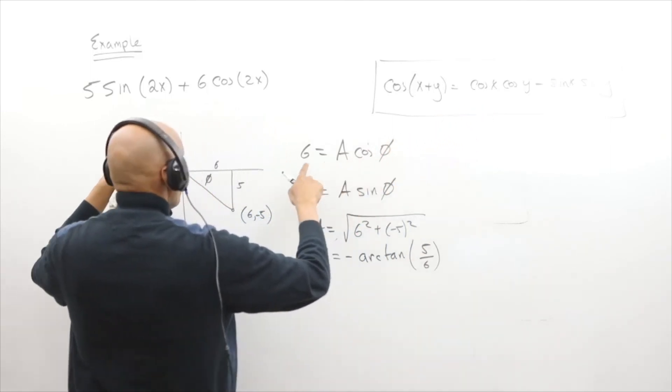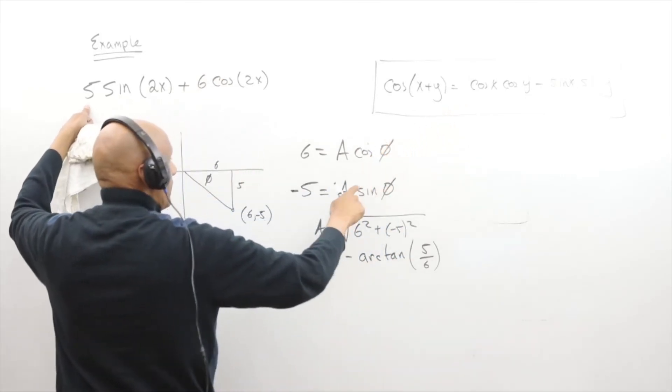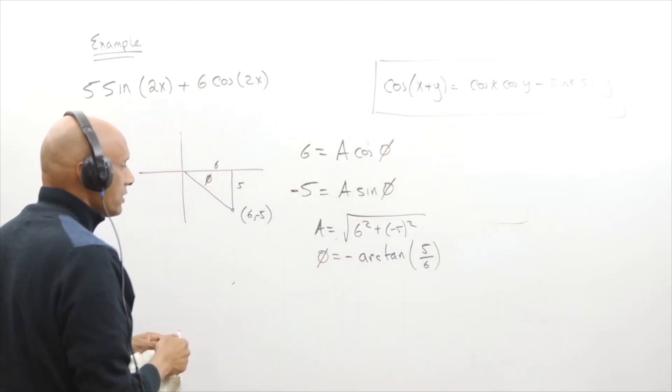So these values, I want a cosine portion here and I want a negative sine portion over here, so we've got this arc tangent 5 over 6.